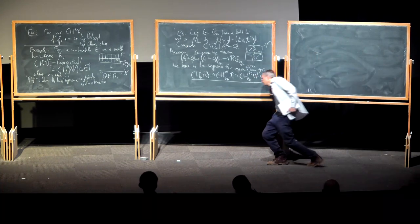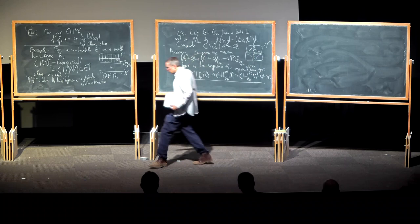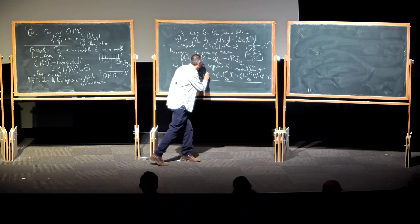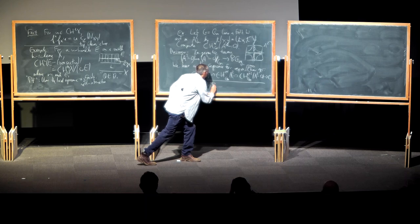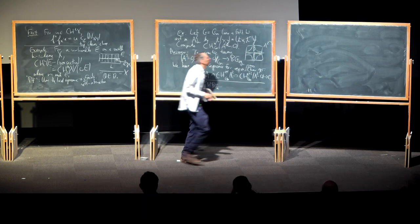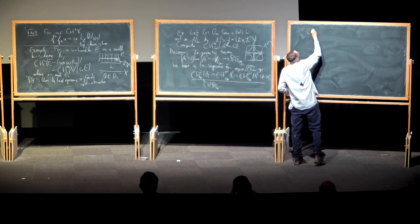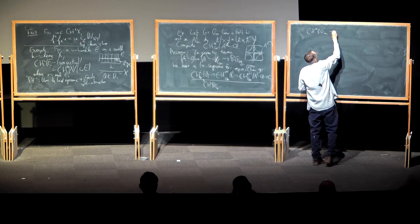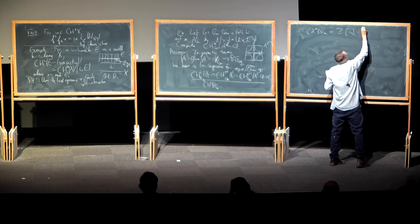We need to understand what those groups are. The first one is clear: this is the G_m-equivariant Chow ring of a point, which is just the Chow ring of BG_m. And we know that the Chow ring of BG_m is the polynomial ring on one generator in degree one.